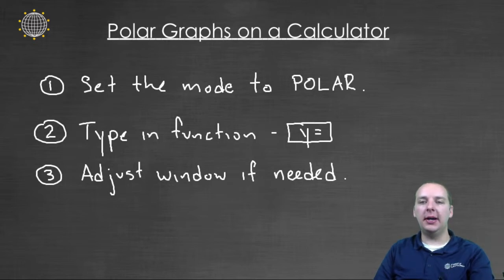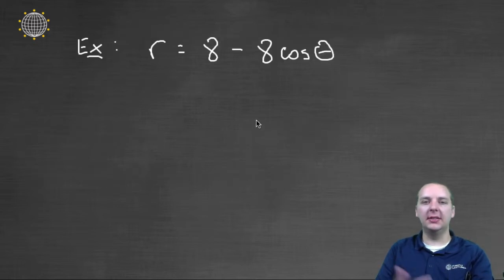Alright, so let's open up our TI and we're actually going to try this example here. R equals 8 minus 8 cosine theta. Let's see if we can figure out what this looks like, 8 minus 8 cosine theta.